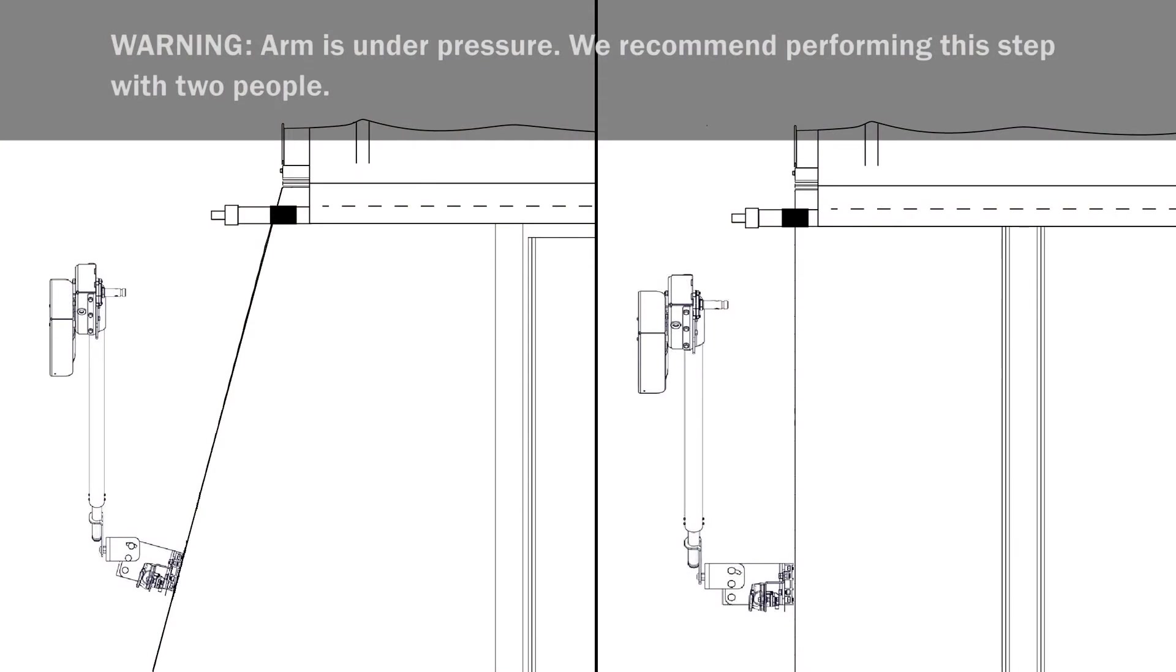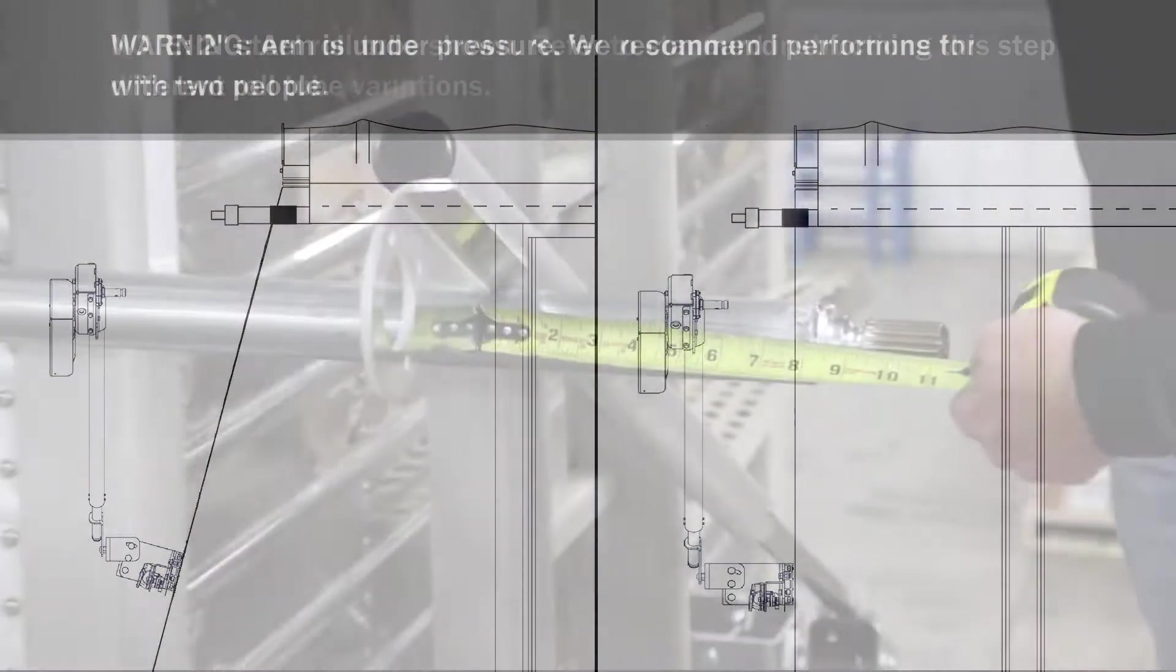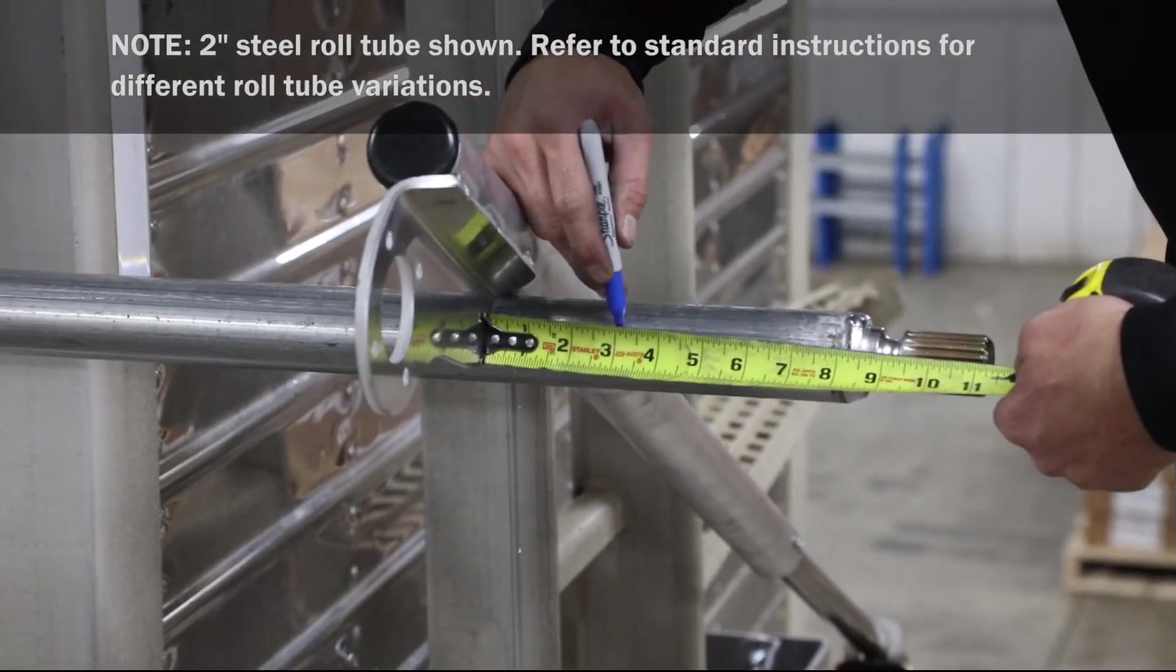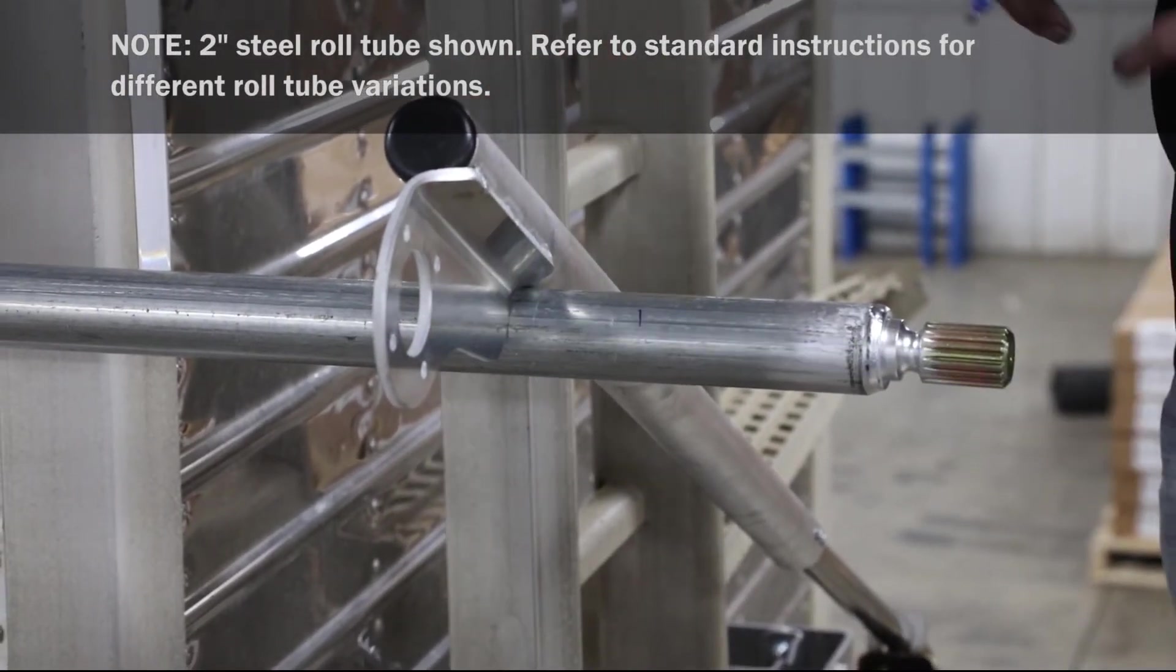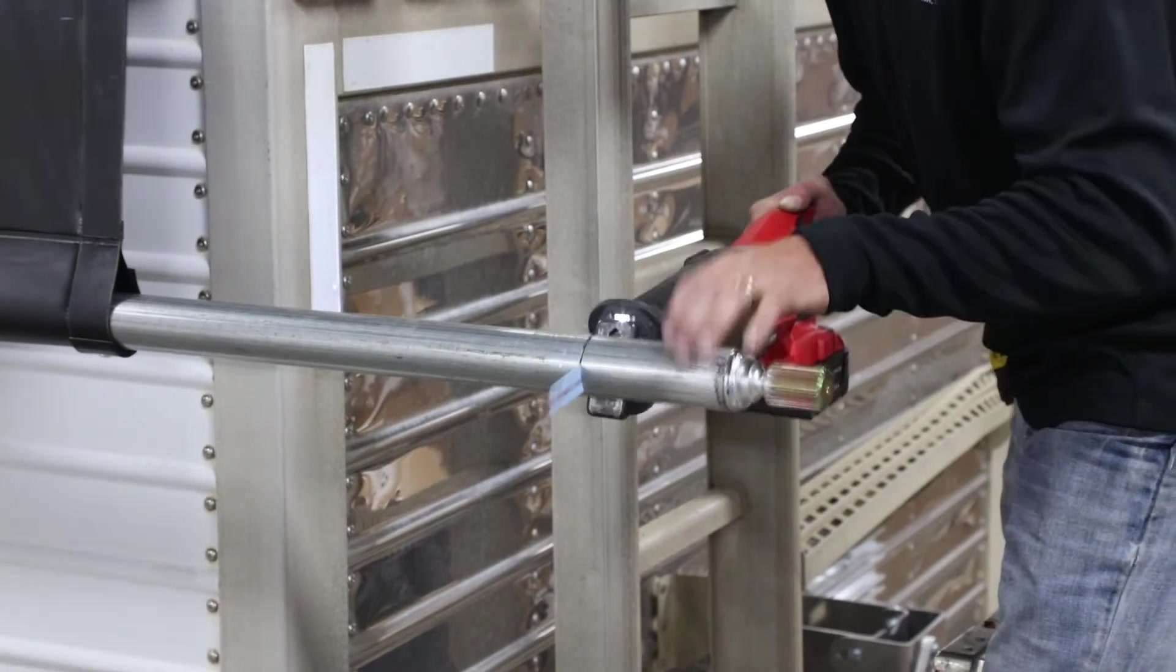Raise rear spring arm up at 90 degrees in vertical plane to tube and mark. Then measure 3 inches back from mark and make second mark. Cut off excess roll tube on second mark.